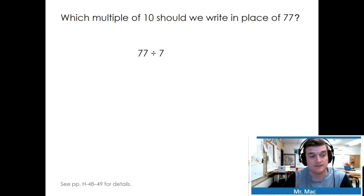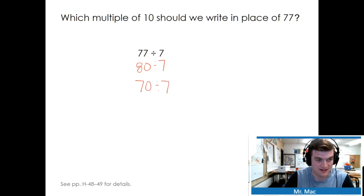Which multiple of 10 should we write in place of 77? 80 is possible. 80 divided by 7, but we'd end up with a remainder. We know that 70 is a real nice easy number to work with because of the 7. We should use 70.